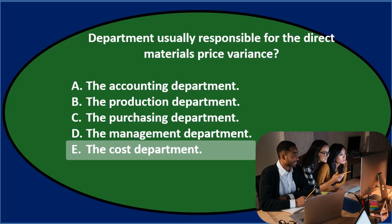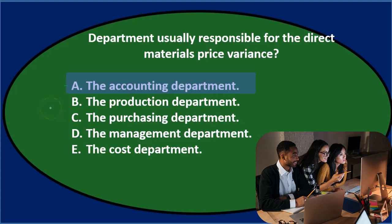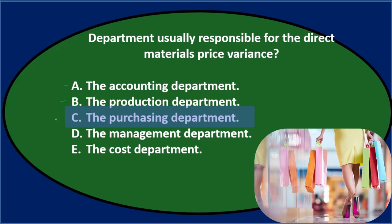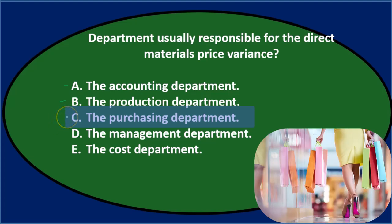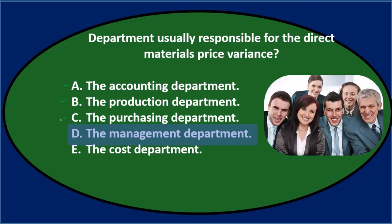Let's go through this again using the process of elimination. The department usually responsible for the direct materials price variance — A, the accounting department: we might think we're doing the managerial accounting process. B, the production department: we're talking about materials, so production sounds reasonable. C, the purchasing department: they purchase materials, so that's plausible. D, the management department sounds too generic. And E, the cost department also sounds too generic, so I don't think it's D or E.